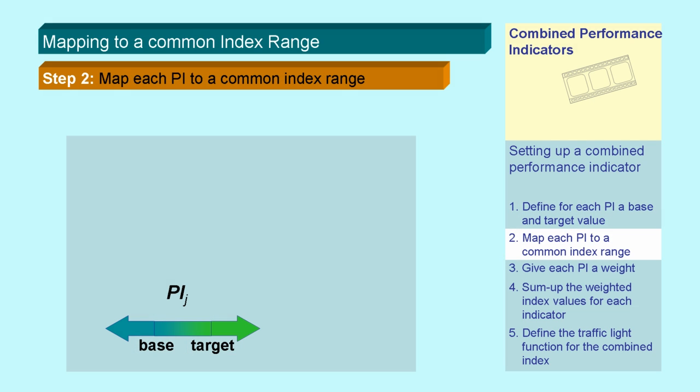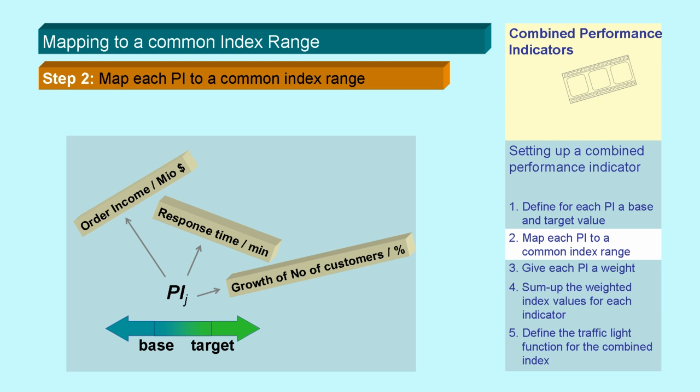In step 2, you map each performance indicator to a common index range, as the measured numbers and quantities could be quite different. For example, order income in million dollars, response time in minutes, or growth of number of customers in percentage. So the common index range will allow an undistorted comparison of these different quantities and numbers.